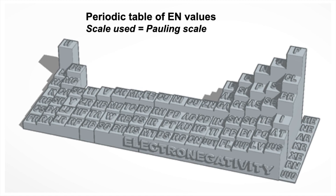Moving on to this slide, we've got a 3D periodic table showing the relative electronegativity values of most of the elements. Just to apologise that they've got capital letters for the second letter — obviously these should all be lowercase, but apart from that it's doing the job. Just to say that the scale we use to measure electronegativity is called the Pauling scale. I want to pick out a couple of things before moving on to the final section.